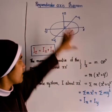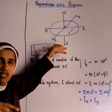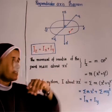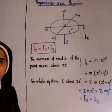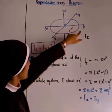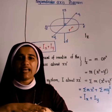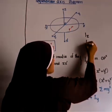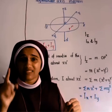Consider a plane rigid body where ZZ' is the axis passing through its center and perpendicular to the plane. Let Iz be the moment of inertia about ZZ'. There are two other axes, XX' and YY', which are perpendicular to each other and lie in the plane of the body. Ix and Iy are the moments of inertia about XX' and YY' respectively.